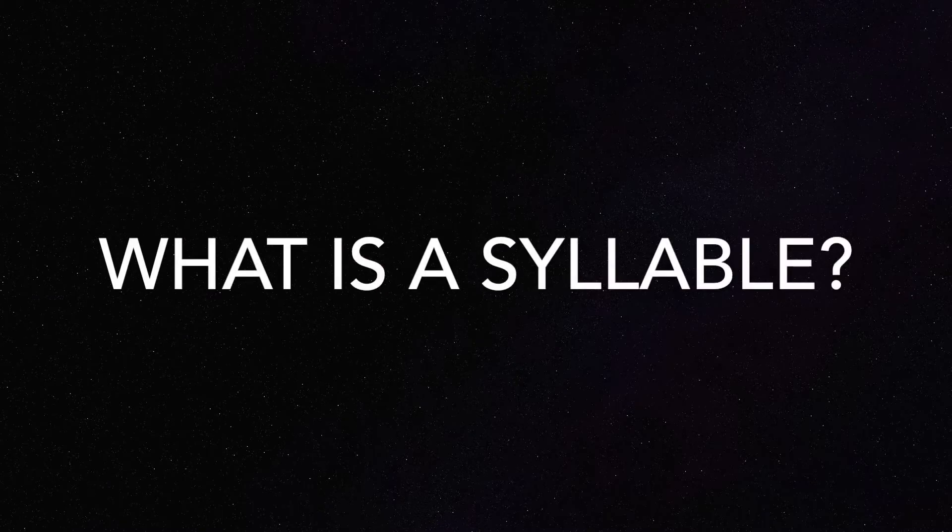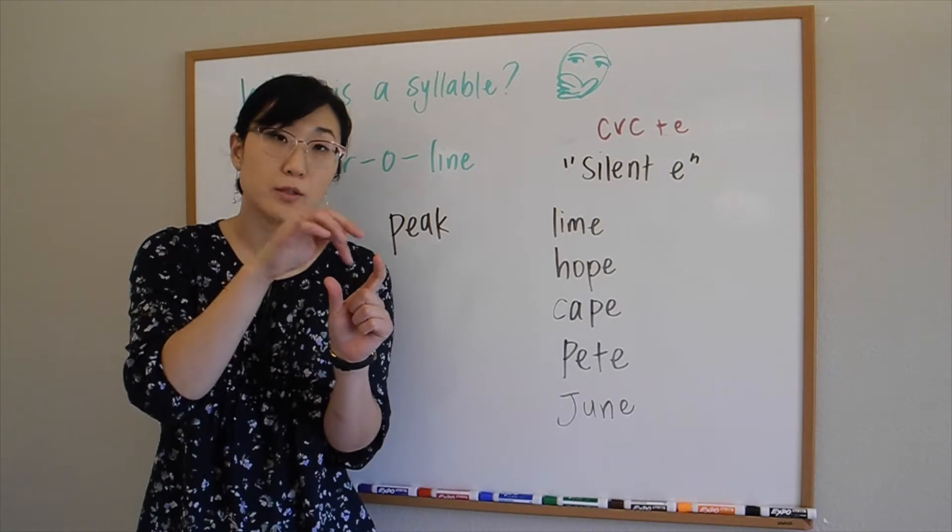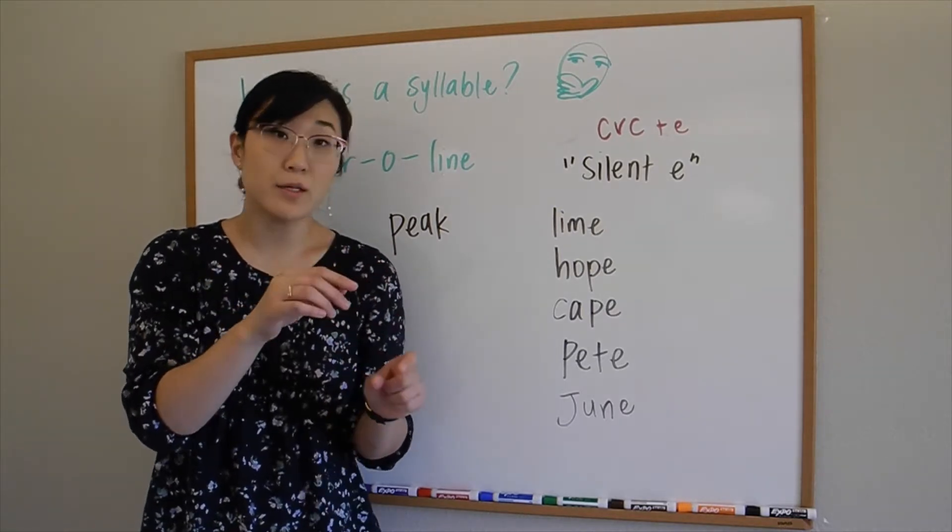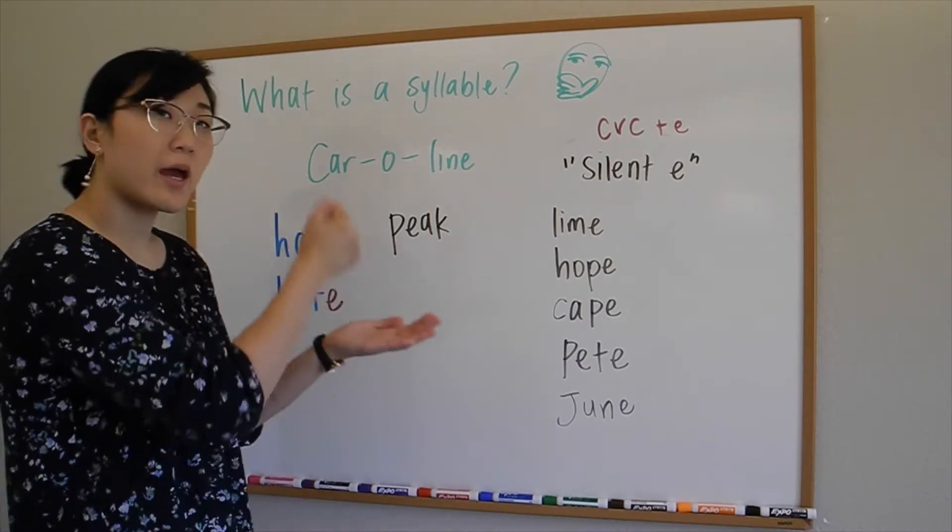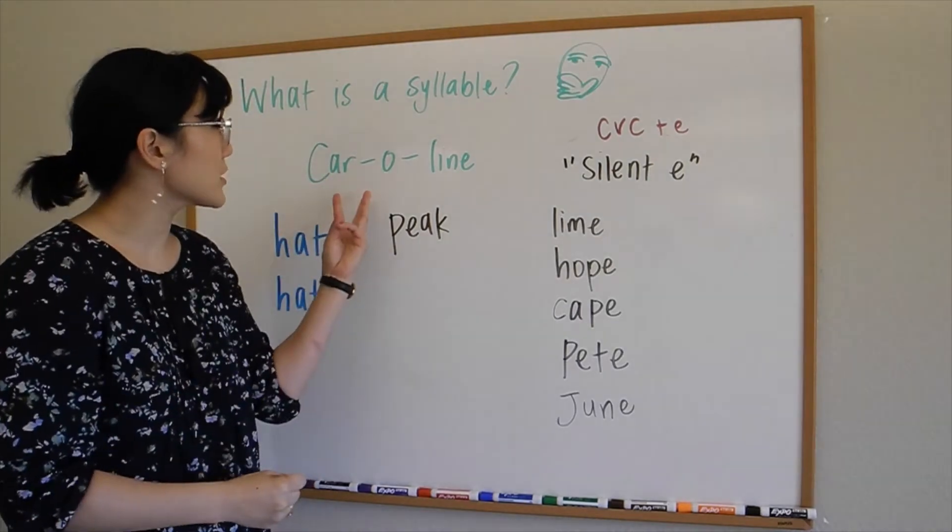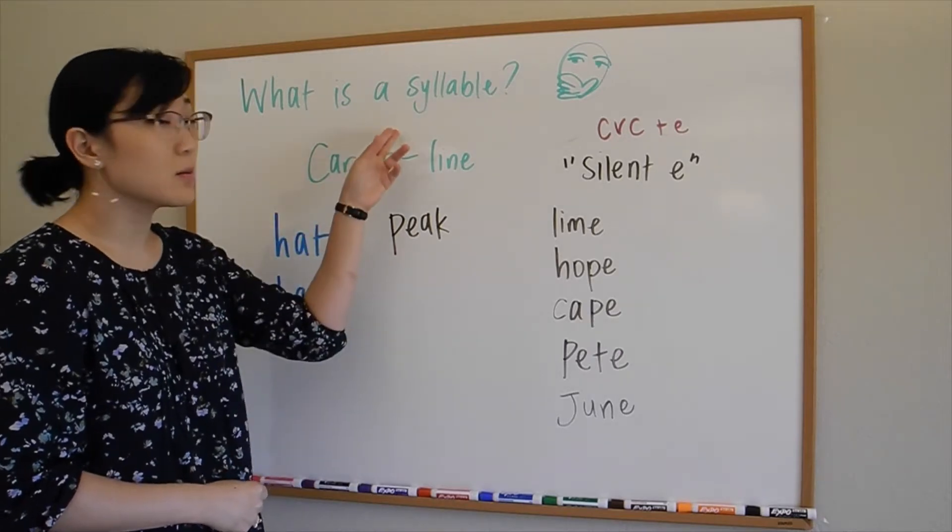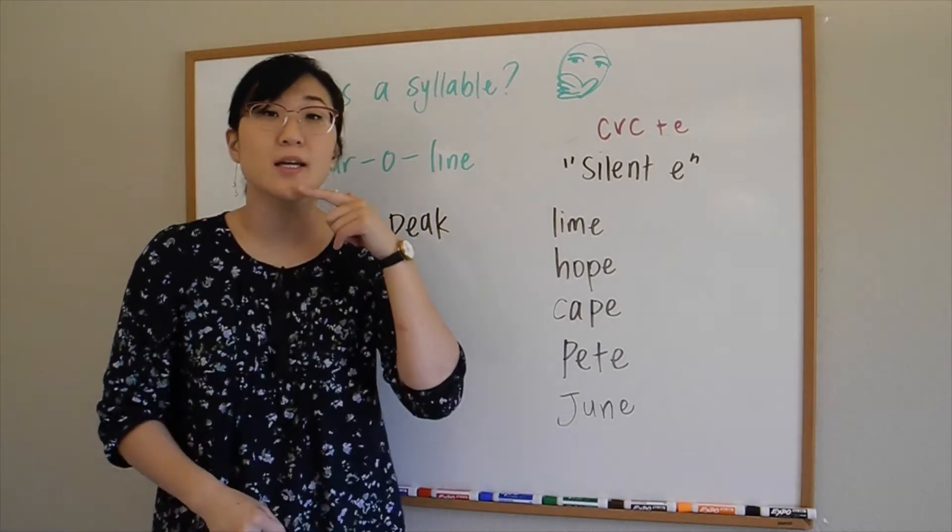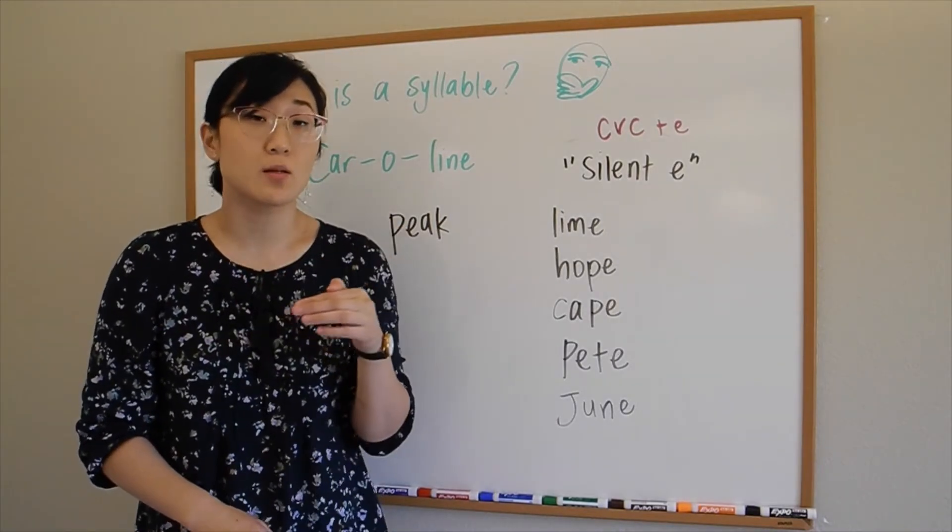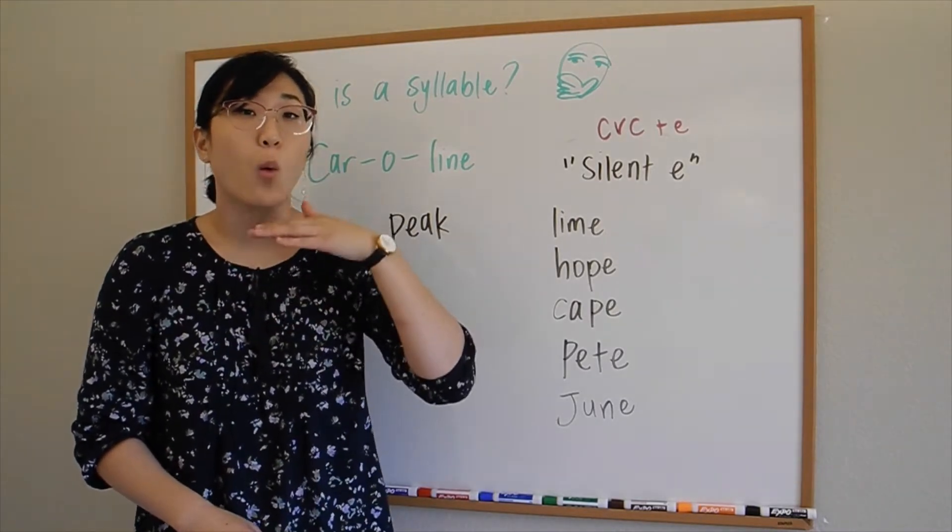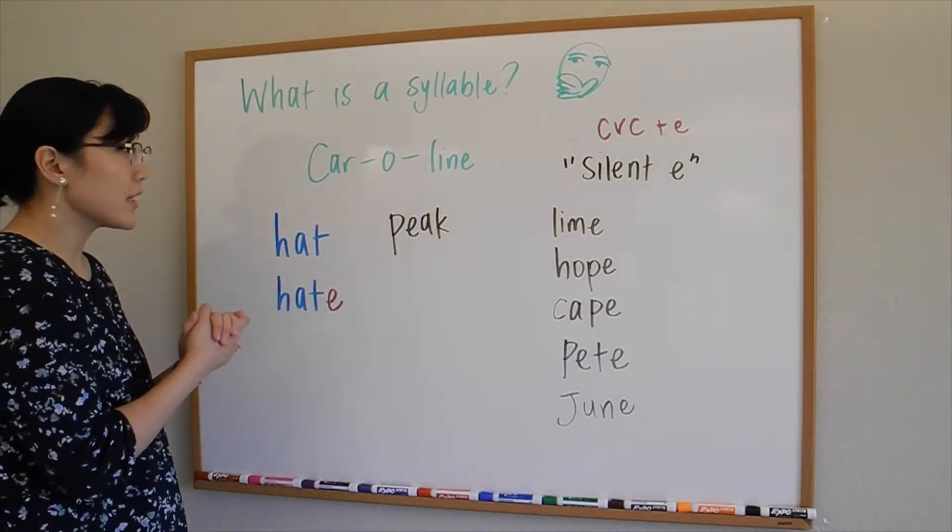So what is a syllable? Again, it is a unit of sound that includes a vowel—not what you see, but what you hear. For example, in my name Caroline, it has three syllables. One way you can count the number of syllables in a word is by looking at the person's chin. Every time it moves up and down is one syllable count.